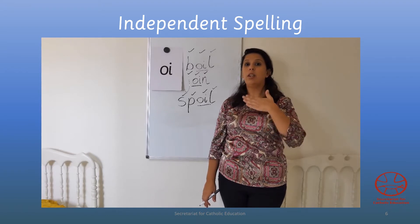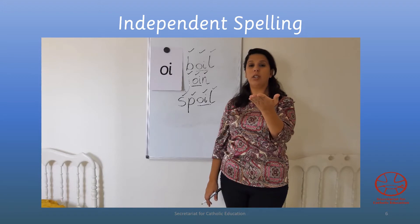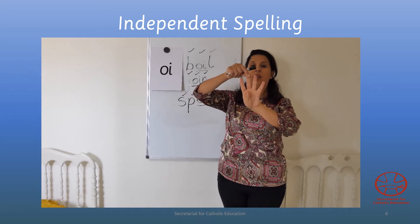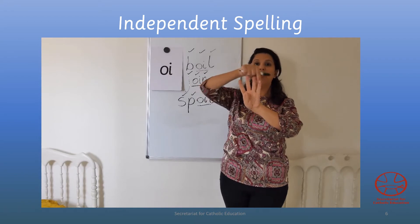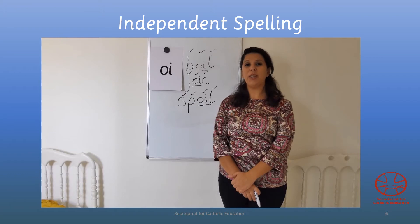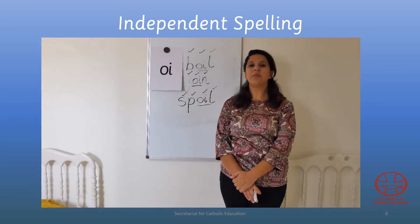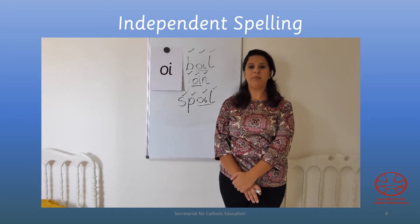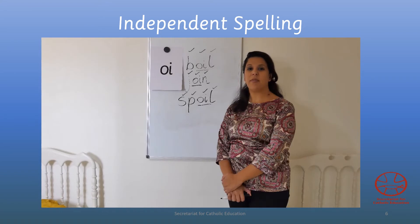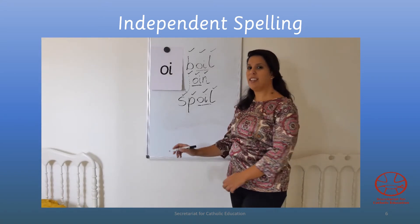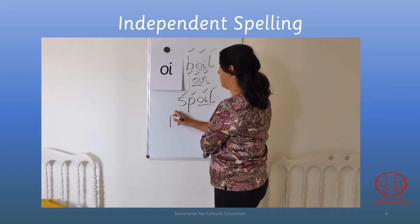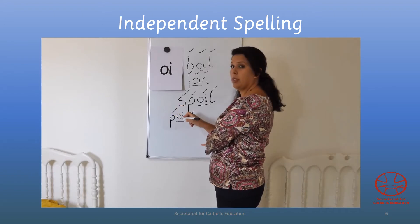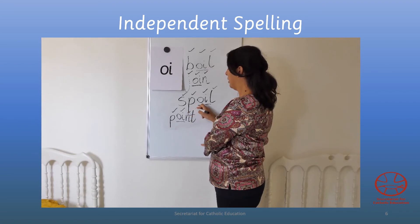And our final word is 'point'. Point — four sounds. Show me four fingers. Let me hear you spell it. Well done — write it. You're saying your letter names so nicely. Shall we check our work together? Tick for your P, tick for your oi, tick for your n, and tick for your t.